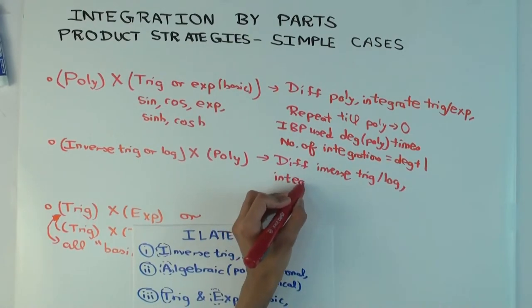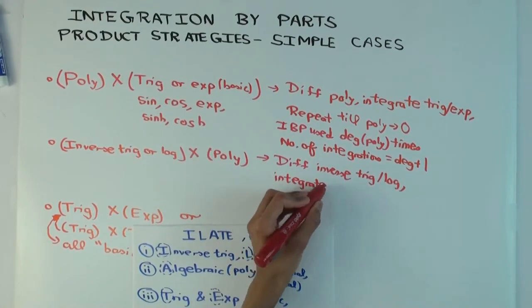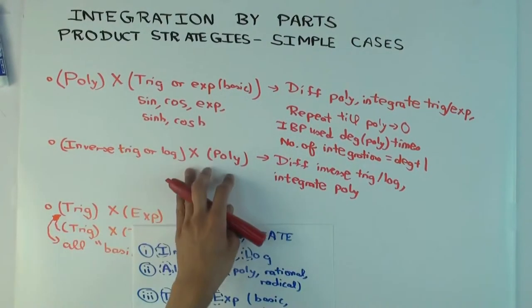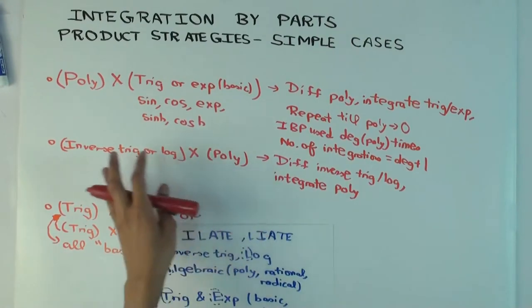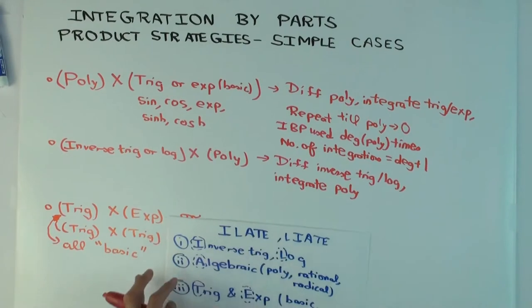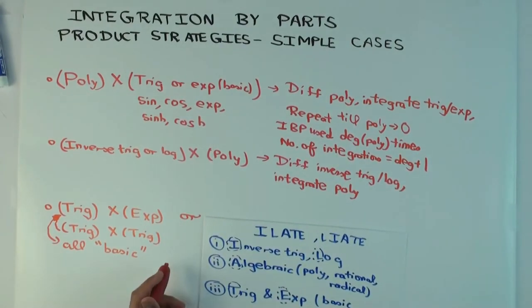So you differentiate the inverse trig or log and you integrate the polynomial. The polynomial does become a little more complex, but that's not an issue, because the point here is you're trying to move out of this domain and completely into the algebraic domain. And it will completely go into integration of a rational function or integration of a radical.